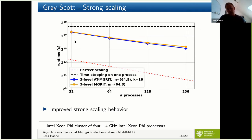This advantage is visible in strong scaling behavior. Compared to perfect scaling in red and sequential time-stepping on one process, ATM-Grid in blue improves strong scaling compared to M-Grid in orange by reducing the serial amount of work on the coarse level. Unfortunately, as typical in parallel-in-time methods, we remain far from perfect scaling.